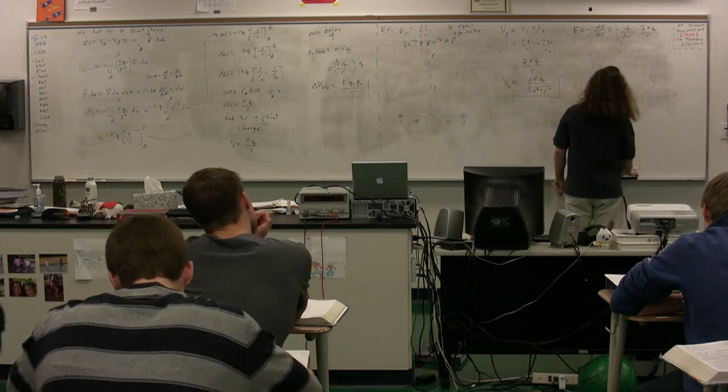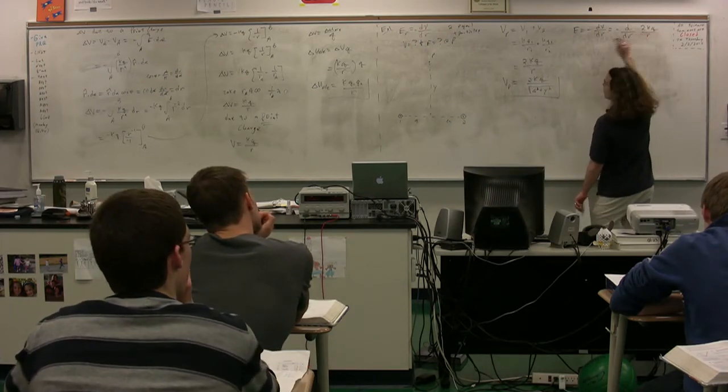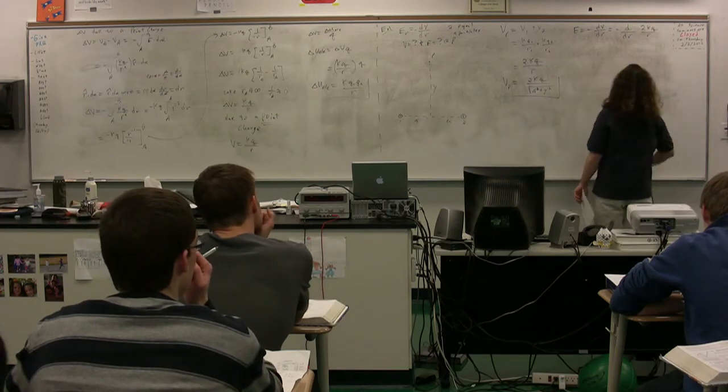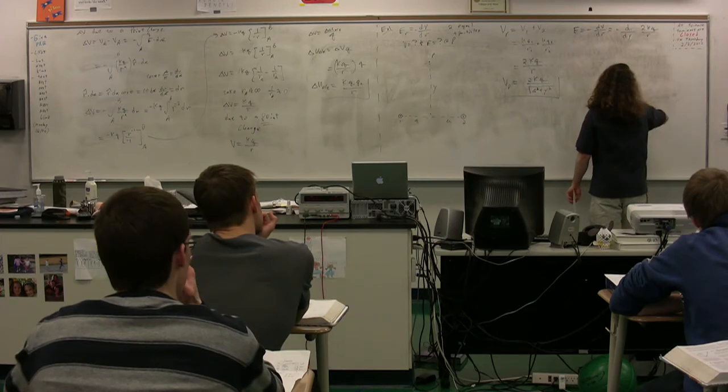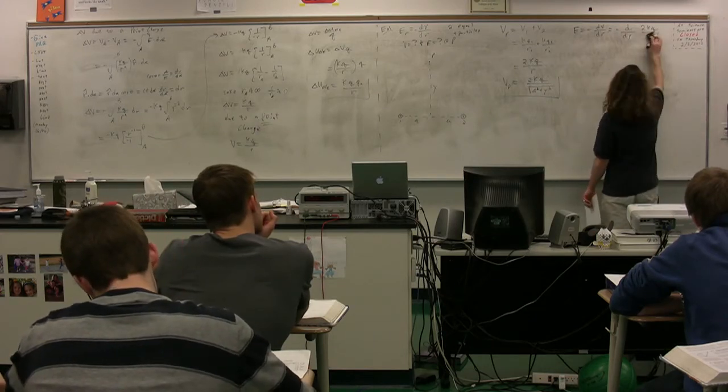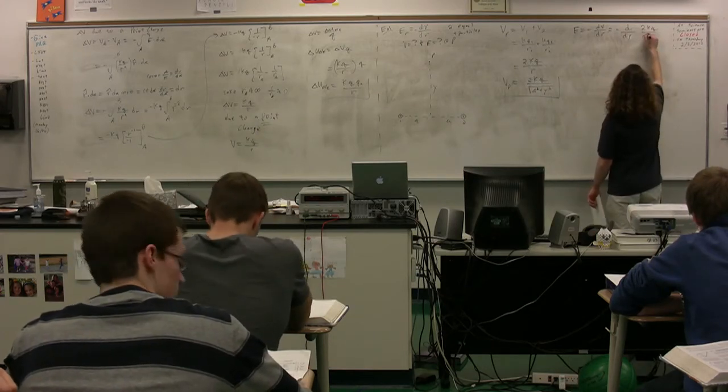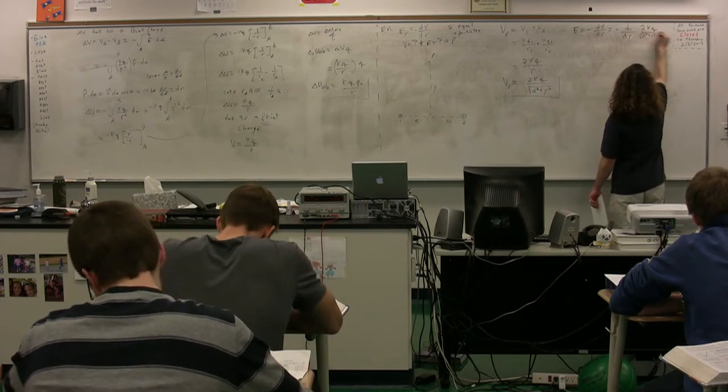Actually, we probably shouldn't do that because we actually know the direction here, so rather than R, we should identify the direction, which is the electric field is in the Y direction, so we should leave this actually as A squared plus Y squared, so that we can work with it. A squared plus Y squared, the square root.